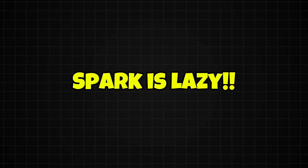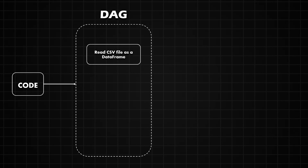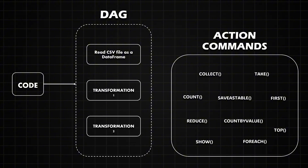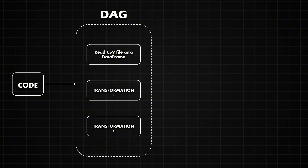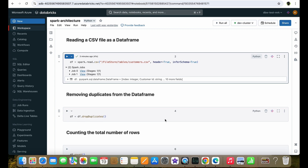Now let's come back to the lazy evaluation topic. As mentioned earlier, Spark is lazy in nature — it will not directly execute the code when you run it. Instead, it first creates a logical plan in the form of a DAG. This entire DAG will only be executed when an action command is called in your code. These are some examples of action commands in PySpark. Unless an action command is called, Spark does not execute; it just keeps adding steps to the DAG based on the transformations in your code. This process is called lazy evaluation. To summarize: when you run this code, Spark does not directly load the data from the CSV; instead, it just creates a logical plan in the form of a DAG.